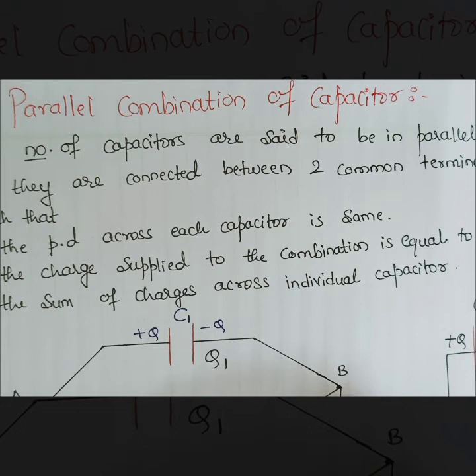Now I need to find what is Cp. If Cp is the equivalent capacitance of parallel combination, then how are we going to define Cp? By this diagram, Cp is equals to, your total charge is Q, Q by V. So Cp is equals to Q by V.